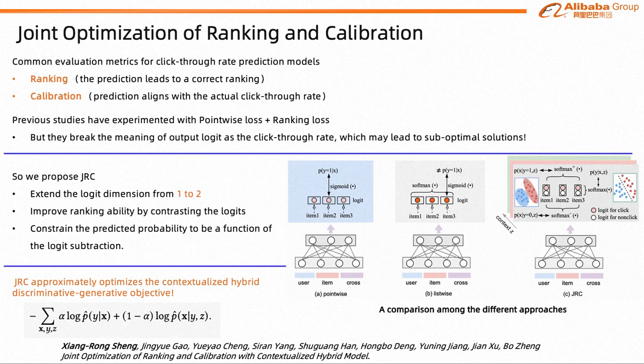The rate prediction model is commonly evaluated based on two perspectives: its ranking ability, which determines if the prediction leads to a correct ranking, and its calibration ability, which determines if the prediction aligns with the actual click-through rate.